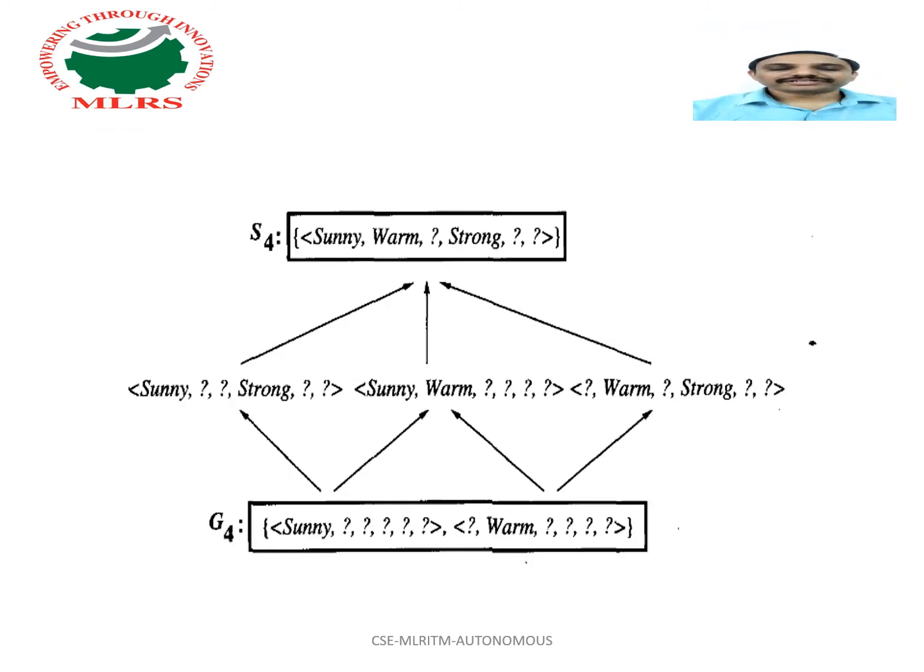After processing these four examples, the boundary sets S4 and G4 delimit the version space of all hypotheses consistent with the set of incrementally observed training examples.